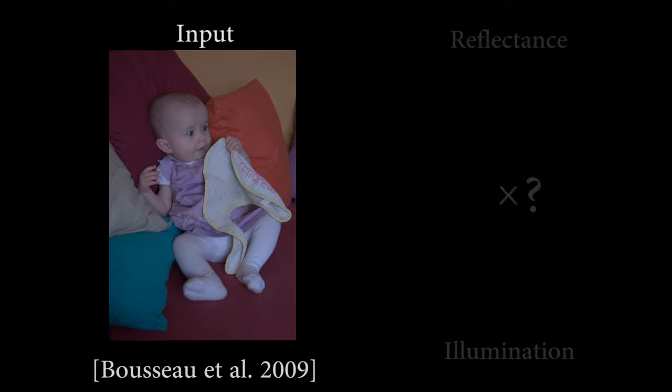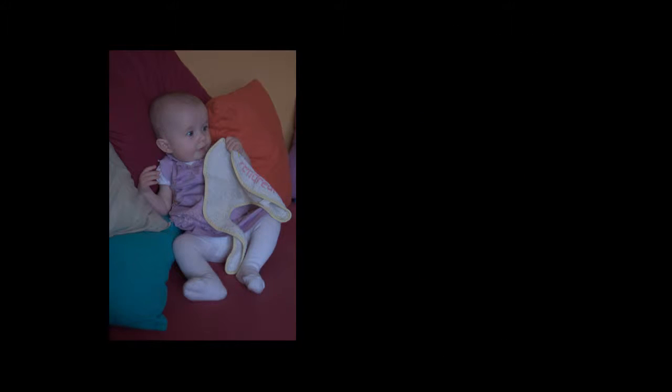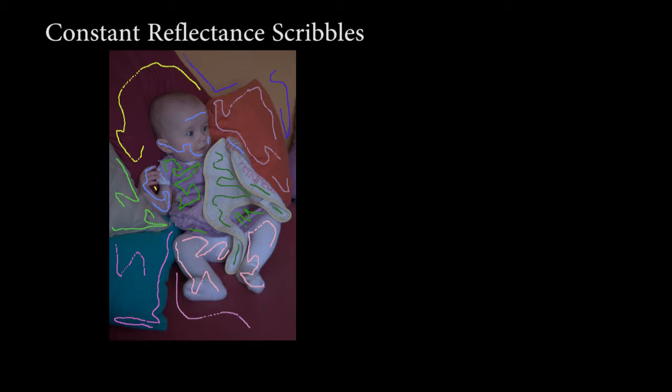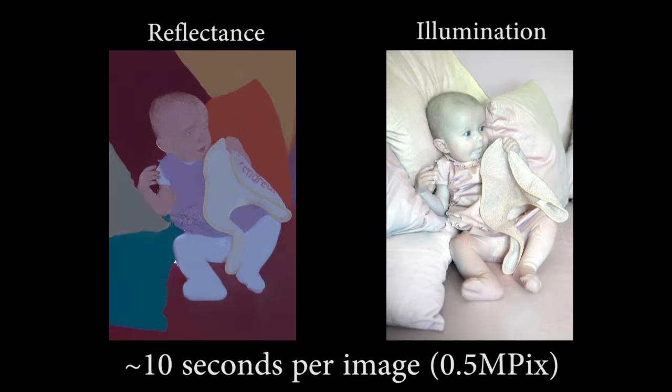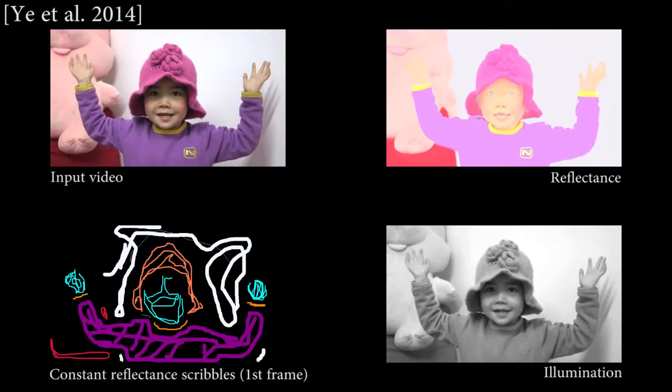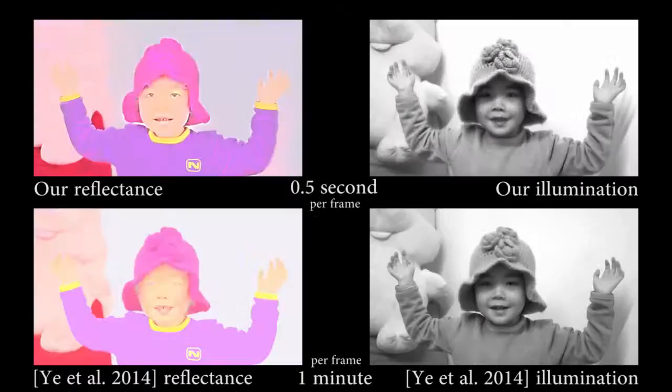Decomposition is hard because illumination and reflectance are joined into a single observation which makes separating these values severely ill-posed. With user interaction, state-of-the-art methods can solve this problem in about 10 seconds per image. However, for videos, we must enforce temporal consistency and even short sequences like this can take many hours to decompose.